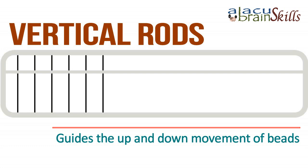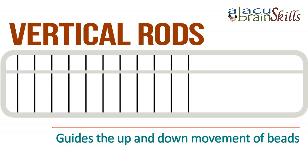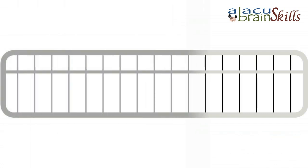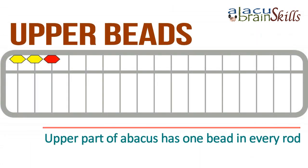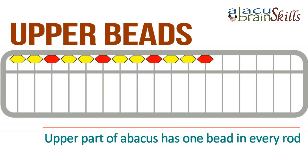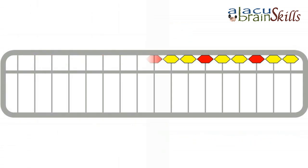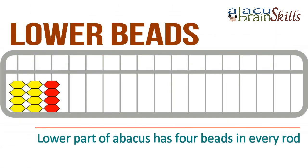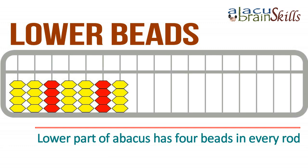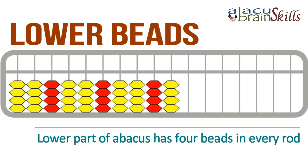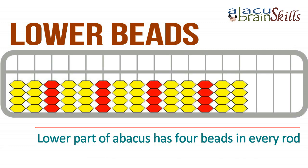Vertical rods: guides the up and down movement of beads. Upper beads: the upper part of the abacus has one bead in every rod. Lower beads: the lower part of the abacus has four beads in every rod.